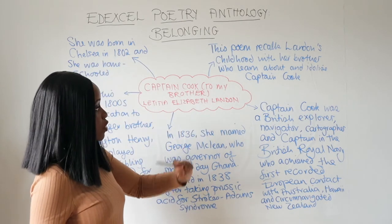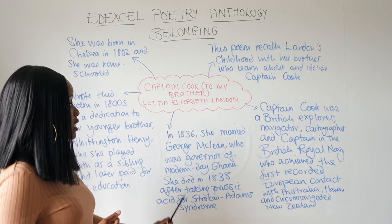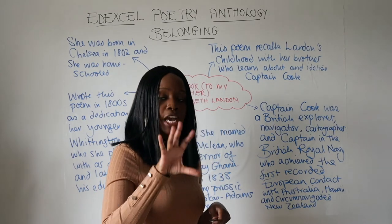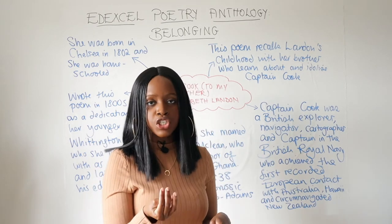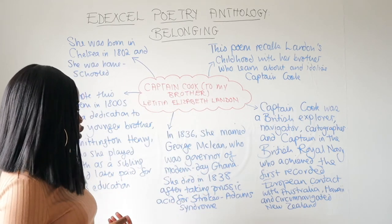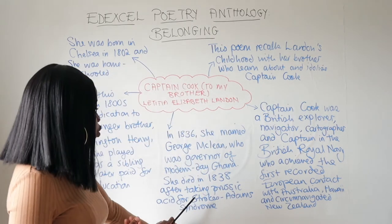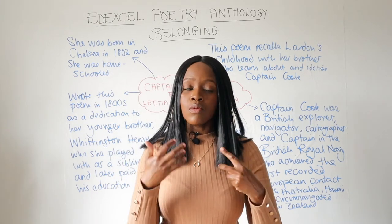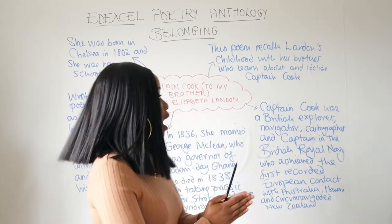This very close relationship influences what is within the brackets of the poem. In 1836, Landon married a man called George McLean, who was Governor of what we know today as modern-day Ghana. She lived there for a while during the time the British Empire had control over Ghana. However, she died only two years later, after taking prussic acid to treat a syndrome she had called strokes-adam. Unfortunately, this was quite a poisonous concoction that probably contributed to her fairly brief life.